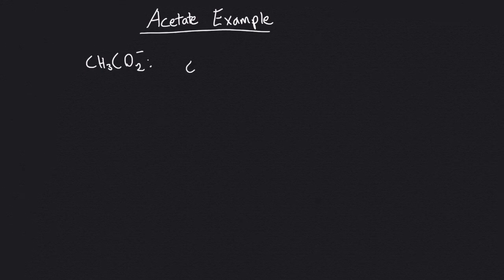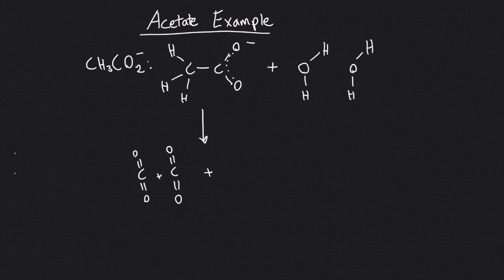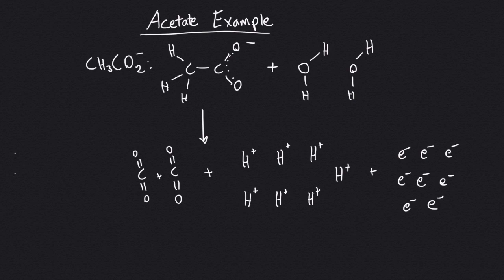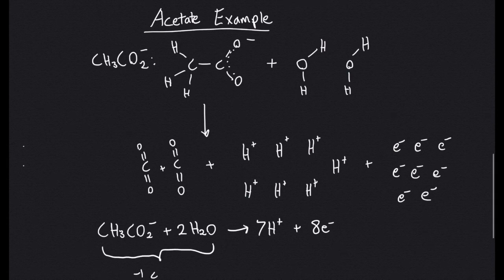The electrogen will digest one molecule of acetate and two molecules of water to produce two molecules of carbon dioxide along with seven hydrogen ions and eight electrons. As you can see, there are more electrons than there are hydrogen ions, and this is because the charge of the acetate is negative. This means that overall this chemical reaction is charge balanced.